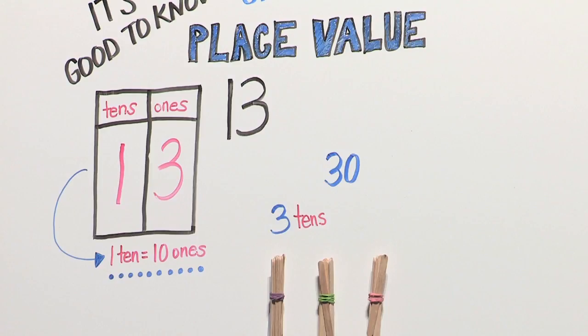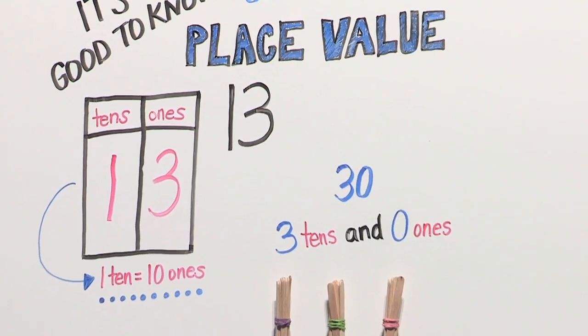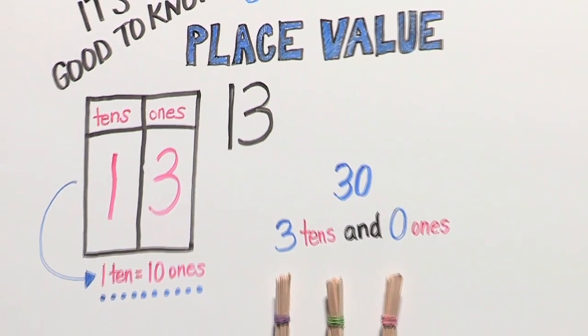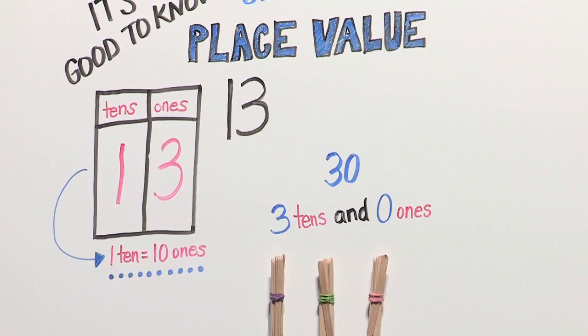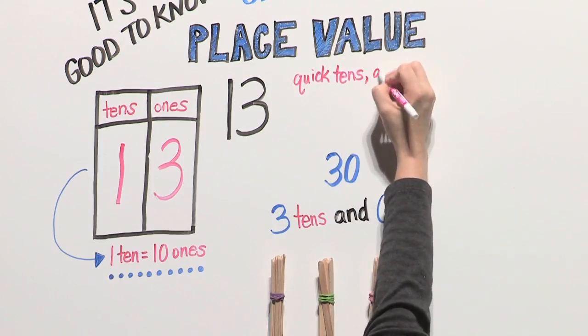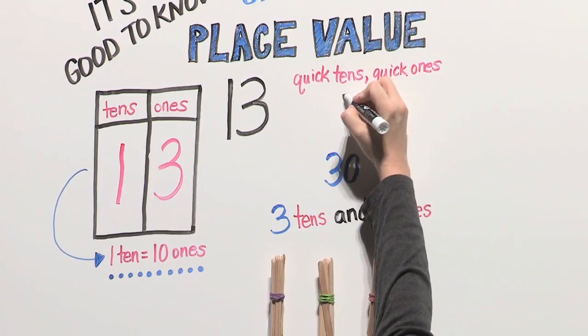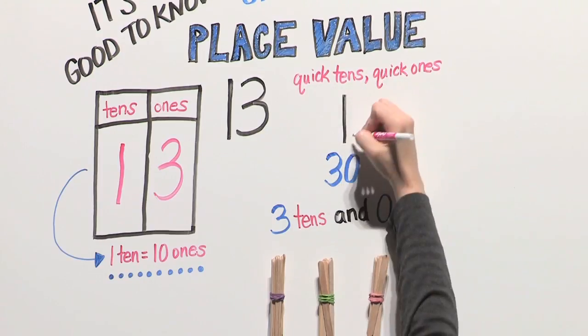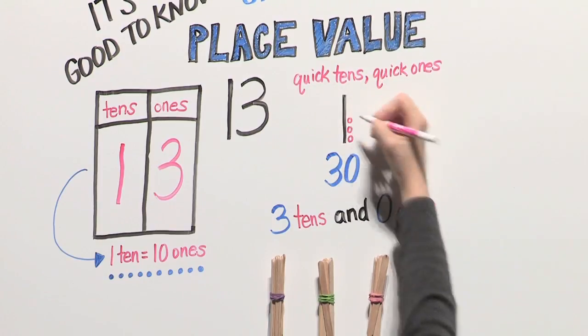Let's go back to our number 13. Once we are comfortable with bundles, we use quick tens and quick ones as our simple math drawings. Quick tens are sticks and quick ones are circles. When we take apart 13, we have one stick and three circles.